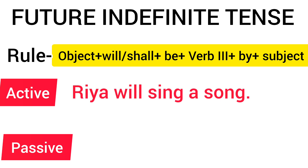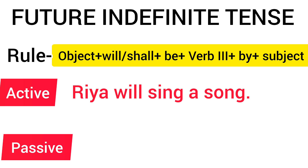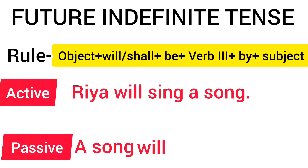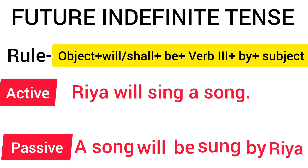Next sentence is: 'Ria will sing a song.' (Ria एक गाना गाएगी.) Try this sentence yourself before I do. So the object is 'a song'. Write 'a song', then 'will' — 'a song will' — then 'be' — 'a song will be' — and sing's third form is 'sung'. Then 'by', and names don't change, so we write 'Ria'. Full sentence: 'A song will be sung by Ria.' I hope you understand.